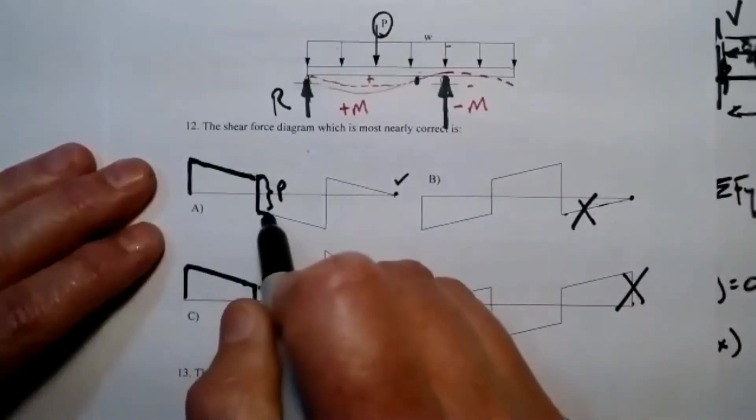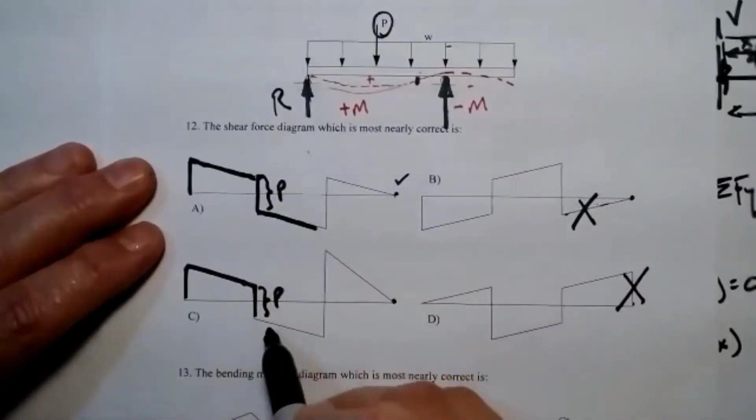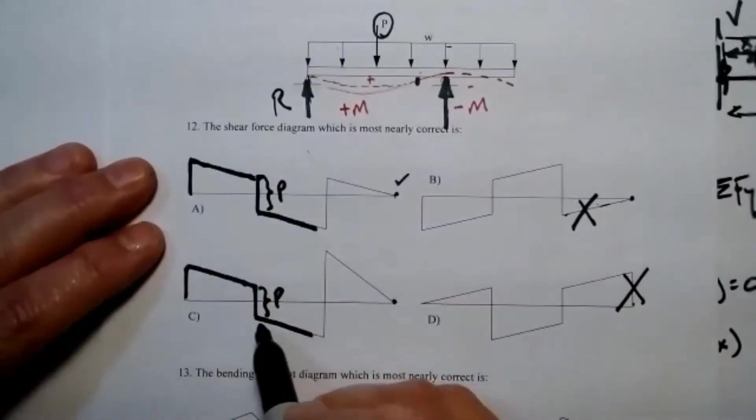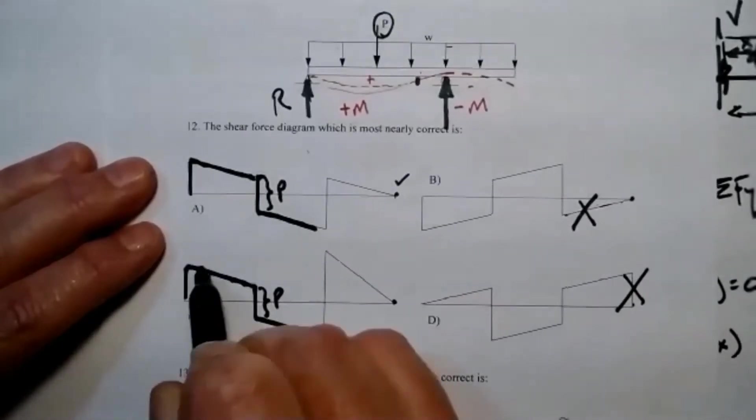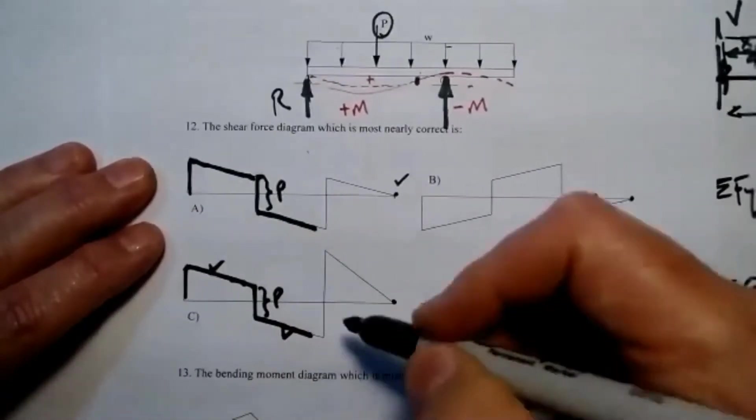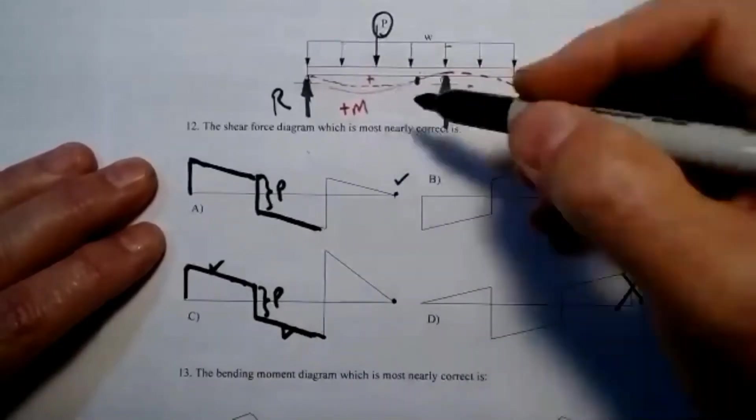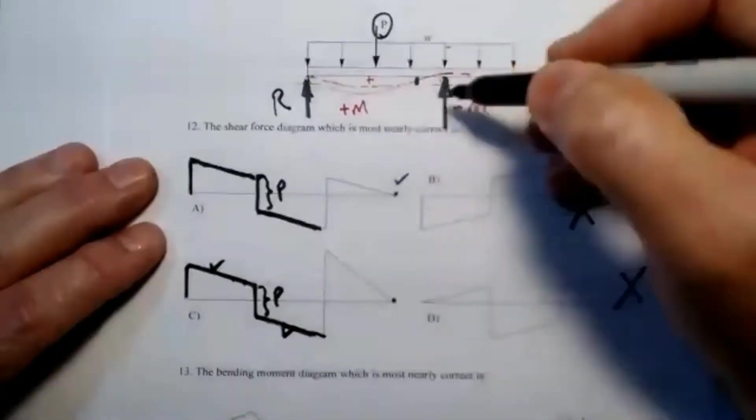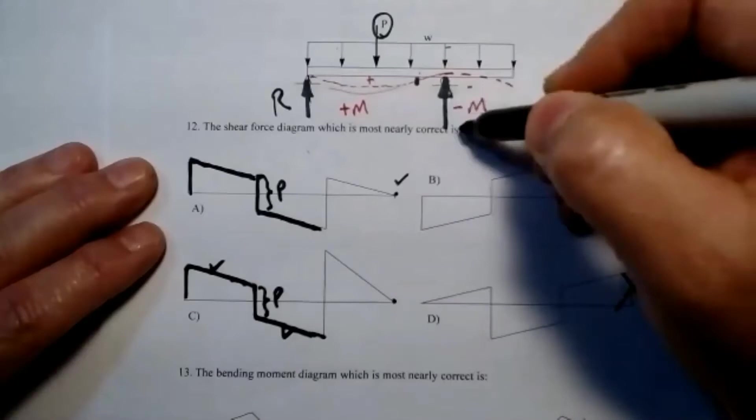Therefore, the slope of the shear diagram stays the same. That checks. That slope stays the same. Now, this vertical change is going to be the magnitude of this reaction.